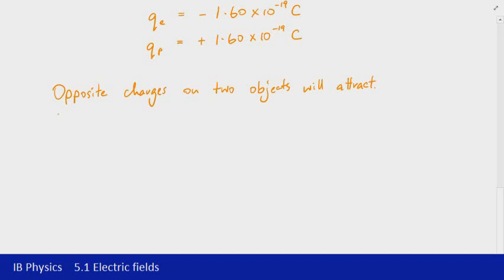If we then have like charges, so if we've got two positives or two negatives on two different objects, it will result in repulsion.